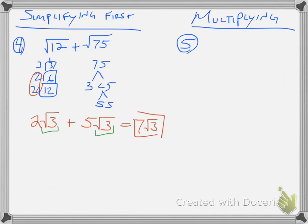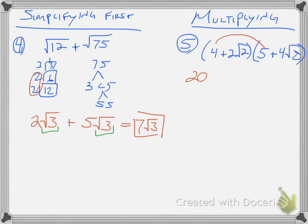Now we have multiplying. You may have some binomials that are multiplying. So: (4 plus 2 square root of 2) times (5 plus 4 square root of 2). This is a binomial, so I'm going to distribute twice, or FOIL. 4 times 5 is 20. Then 4 times 4 square root of 2 — I can only multiply the 4 with what's on the outside, not the inside — so that's 16 square root of 2.